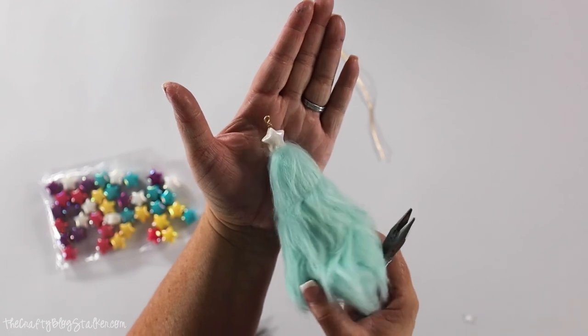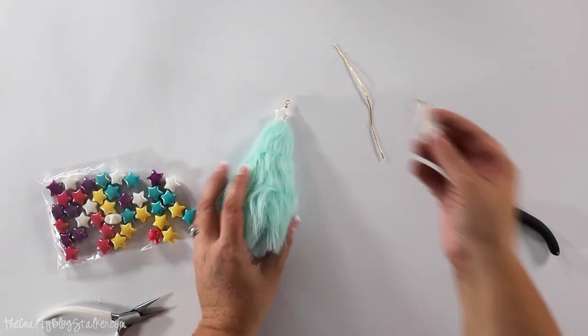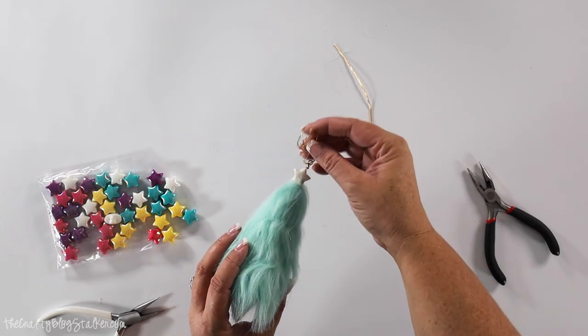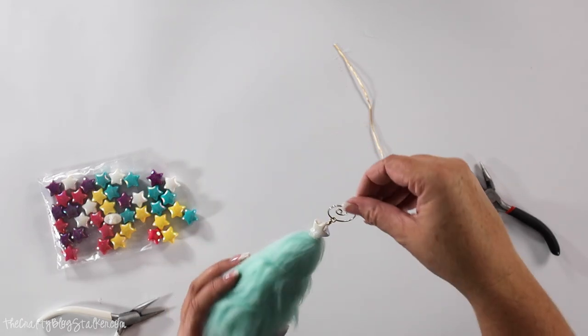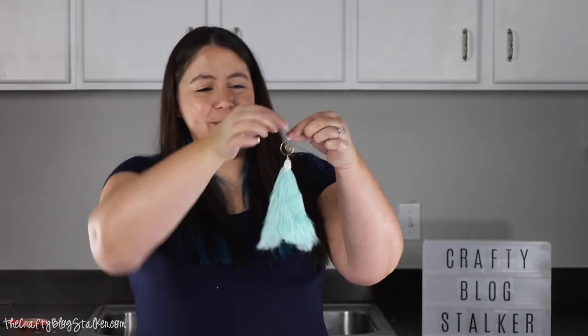And there is our loop for our ornament. We can grab an ornament hook and put that on there. And there is our Christmas tree ornament.